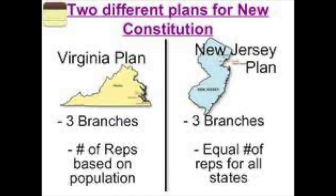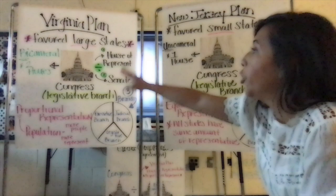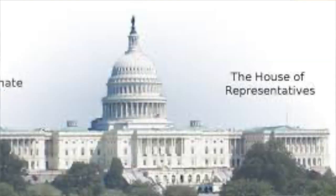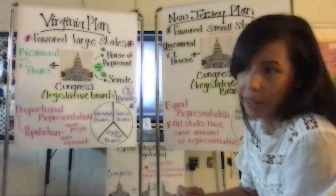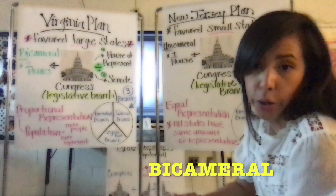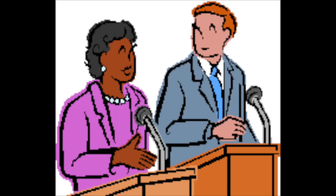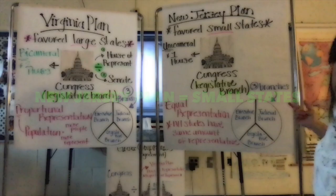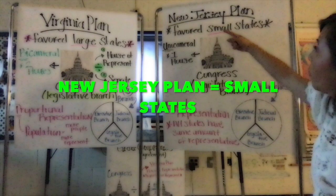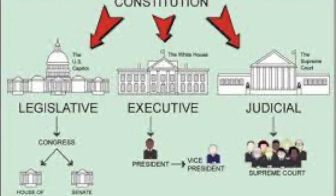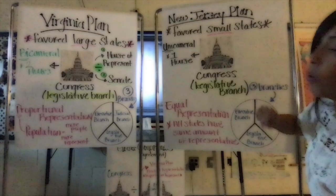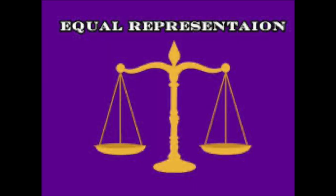We're going to have the Virginia Plan and the New Jersey Plan. The Virginia Plan favors the large states — Edmund Randolph and James Madison came up with this plan. They say Congress should be divided into two houses: the House of Representatives and the Senate, making it bicameral. Representation should be proportional to a state's population — the more people you have, the more representatives you get. They also believe in three branches of government. On the other side, the New Jersey Plan favors the smaller states. They want a unicameral Congress — just one house, not divided. They also support three branches of government, but say every state should have equal representation — the same amount of representatives in Congress.